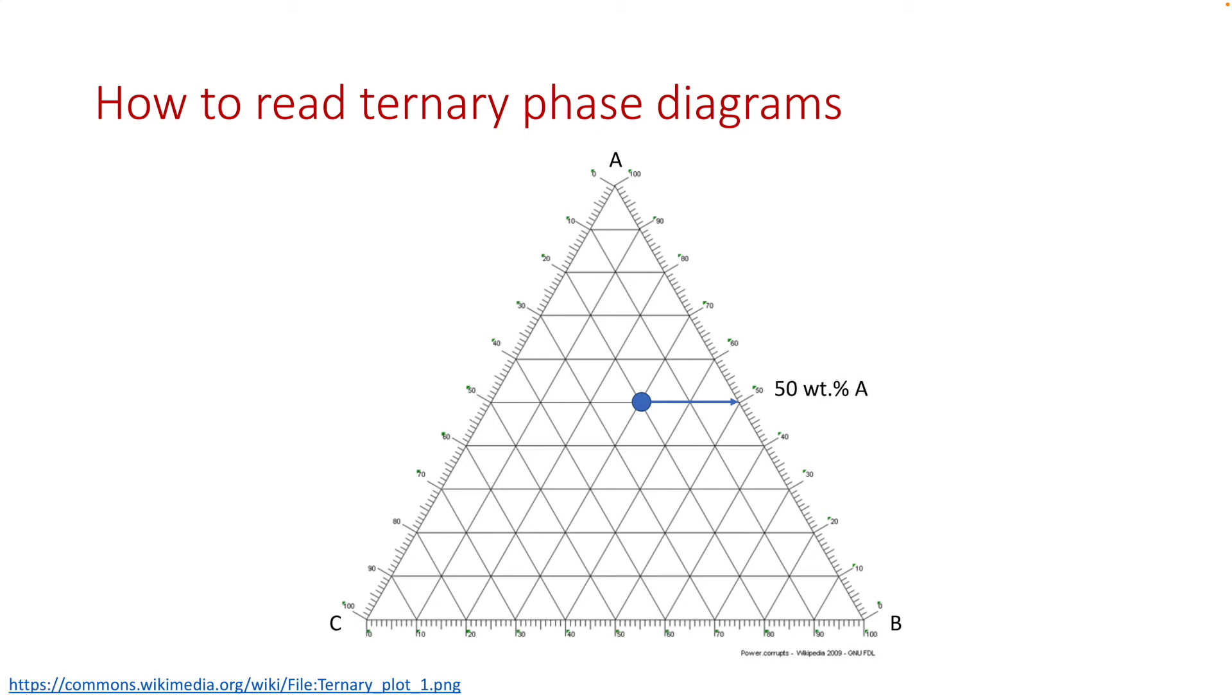To get the composition of C, then you draw a line that is parallel to AB, and it's 20% C. Similarly, for the content of B, you draw a line that is parallel to AC, and read off that's 30% B.